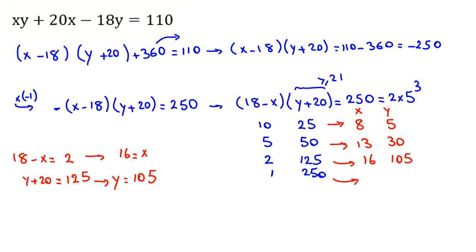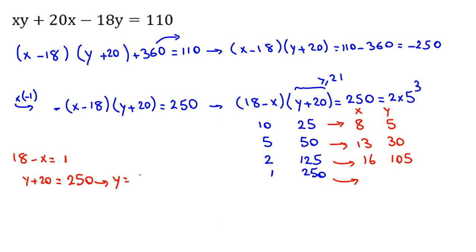Last case: 18 minus x equals 1, and y plus 20 equals 250. So y equals 250 minus 20, which is 230. And x equals 18 minus 1, which is 17. So x equals 17 and y equals 230. The problem asks to find the number of answers, and since x and y are positive integers, we found 4 answers in total.